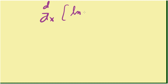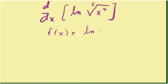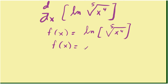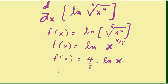How about finding the derivative of the natural log of the fifth root of x to the fourth? We rewrite this as natural log of x raised to 4 fifths. Then, using the property of the logarithm, that exponent becomes the coefficient: 4 fifths times natural log of x. Now it's easy to get the derivative — bring down the constant 4 fifths and multiply by the derivative of natural log of x, which is 1 over x — giving us 4 over 5x.